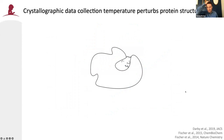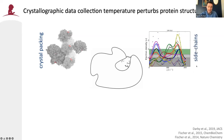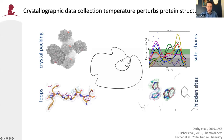Over the past decade or so, we and others have demonstrated that data collection temperature actually perturbs protein structure. That has an impact on packing of crystals — they shrink generally — and sometimes also on the fact that biologically relevant holes that are interesting for ligand discovery are removed. Temperature changes can also remodel side chains within the active site, reveal high-energy states of side chains and loop conformations that are sometimes hidden at cryogenic temperatures, and reveal hidden sites that can be populated by ligands at room temperature but invisible at cryo, which is interesting in the context of allostery.